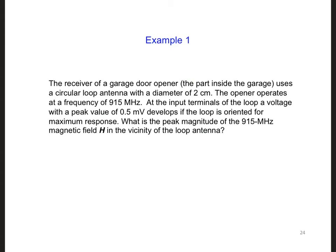Let's work through an example. The receiver of a garage door opener, the part inside the garage, uses a circular loop antenna with a diameter of 2 centimeters.